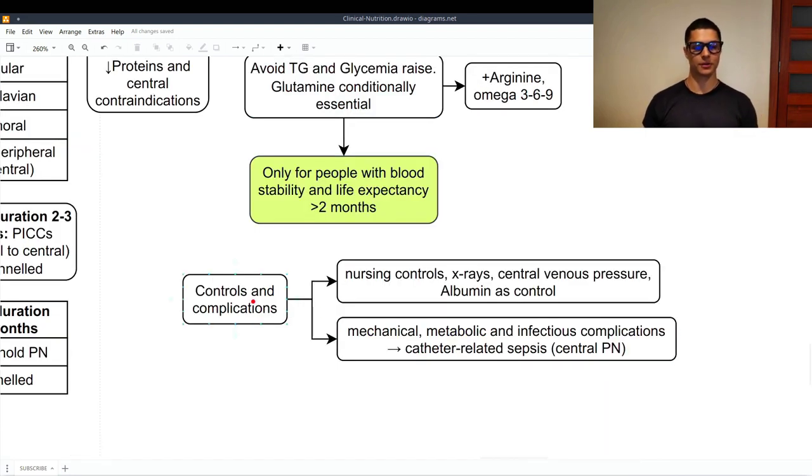So, controls and complications of the parenteral nutrition. Controls, nursing controls, x-rays to check if everything is good internally, central venous pressure, and also we use the albumin as a marker. Complications can be mechanical, metabolic, and infectious complications. Because this thing, the catheter-related sepsis, using the central parenteral nutrition, is more common than wanted.